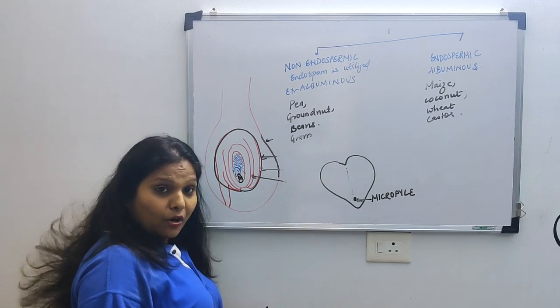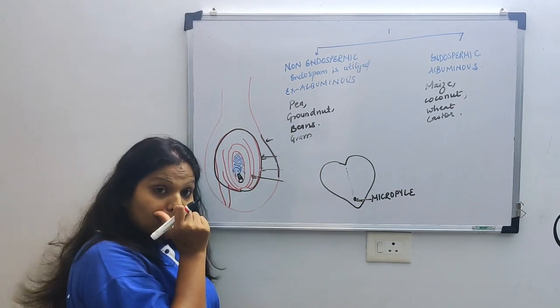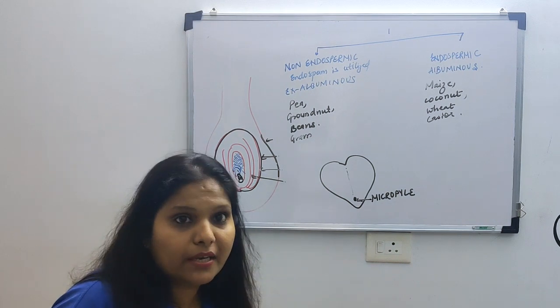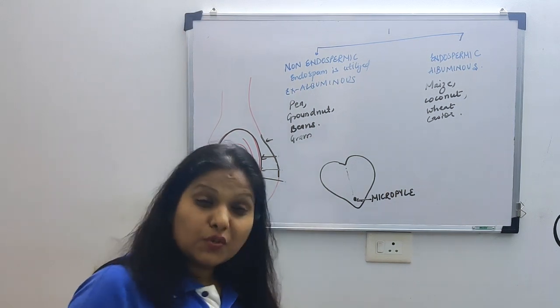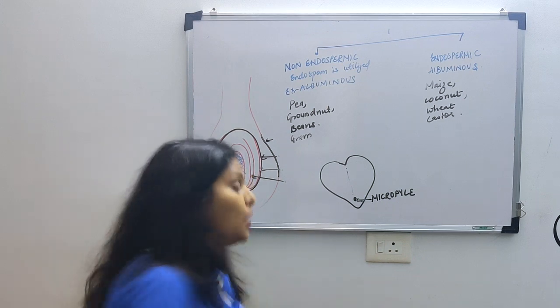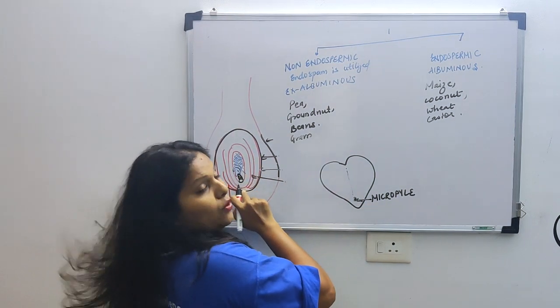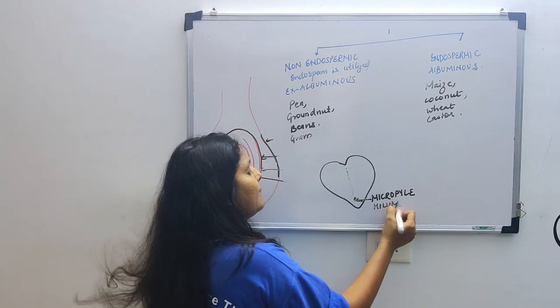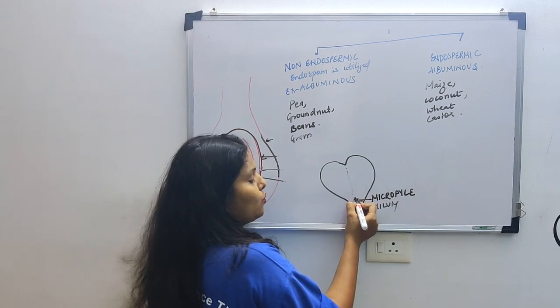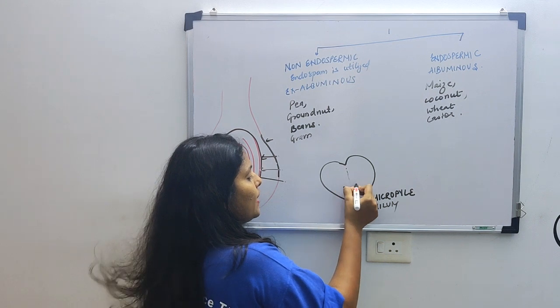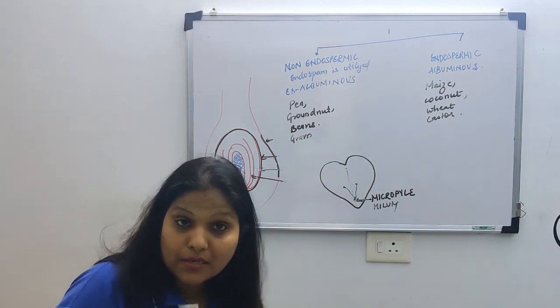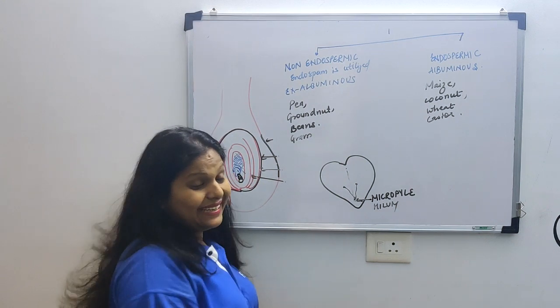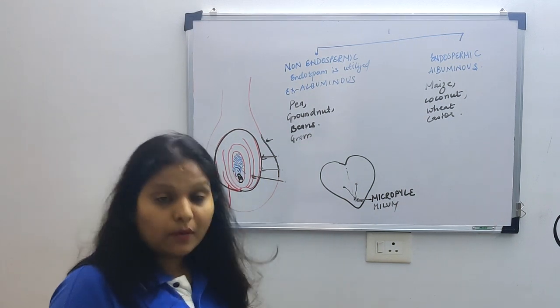Remember, what is the role of micropyle? Endosperm has been utilized. If the seed has to germinate, it needs nourishment. It needs exchange of oxygen, water, etc. So this micropyle - we also call it hilum. Through this micropyle or hilum, oxygen and water will enter so that the seed can activate or germinate. We generally see this in seeds which are non-endospermic. Why? Because their endosperm has been finished.